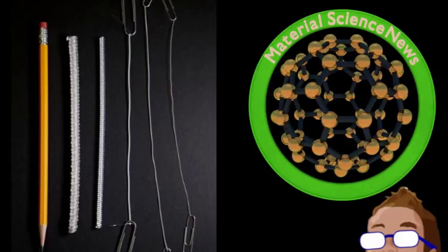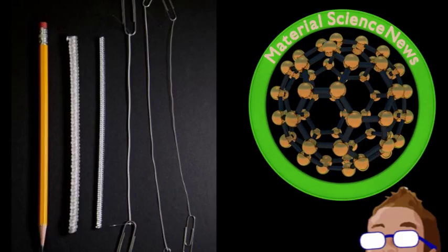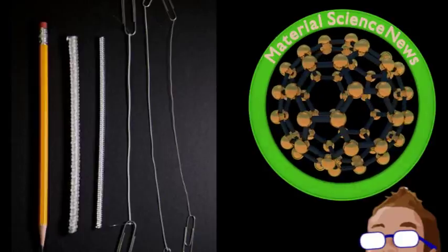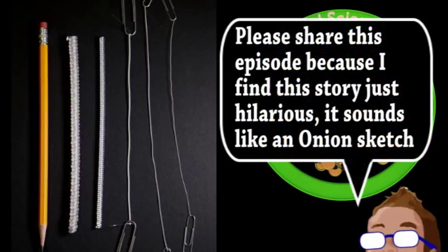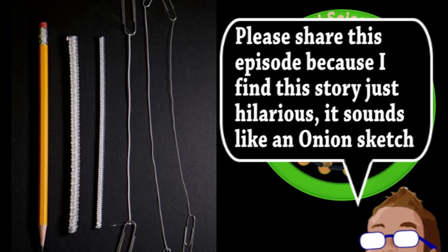human muscles only contract by about 20%, and these fishing line muscles can produce approximately 100 times the mechanical force of a human muscle per weight. The heat that powered these muscles can be provided by a chemical reaction, ambient changes in temperature, or by passing a current through a resistant material, such as metal-coated sewing threads.